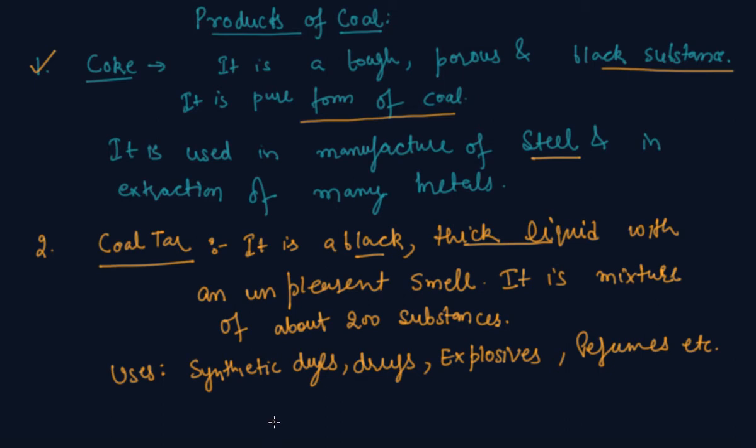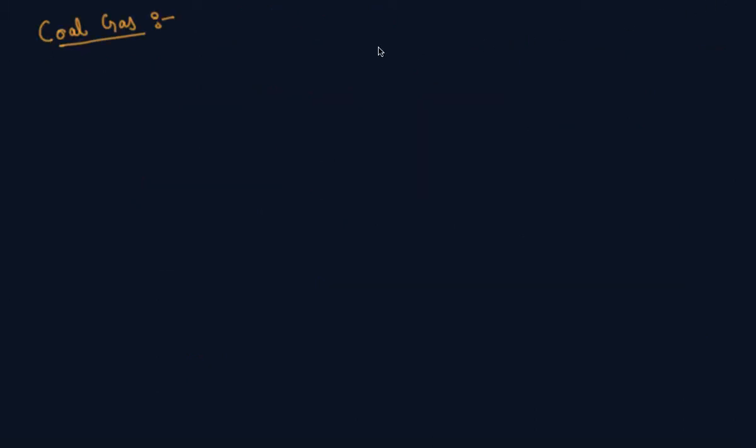So let us move to the third part which is coal gas. Let me erase first all this. So student, this is the third product of coal, which is coal gas. It is obtained during the processing of coal to get coke.